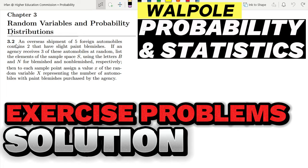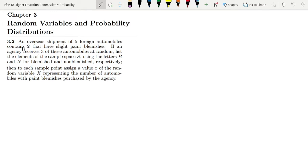Welcome my guys, this is question 3.2 of chapter 3. The statement is: an overseas shipment of five foreign automobiles contains two that have slight paint blemishes. If an agency receives three of these automobiles at random...